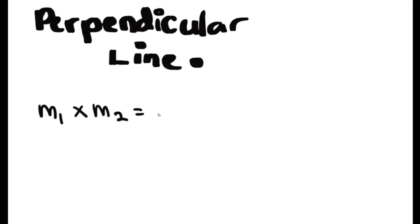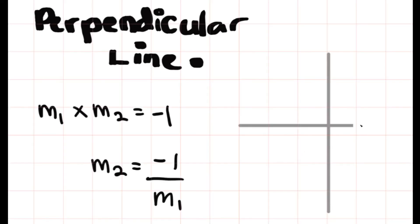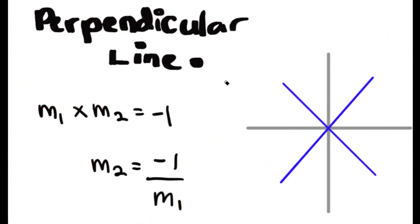Going to the next part of this topic, which is the perpendicular line. The formula of a perpendicular line is m1 times m2 equals negative 1, so m2 is equal to negative 1 over m1. And the two lines should be perpendicular, which is 90 degrees.